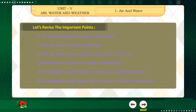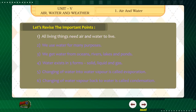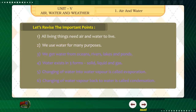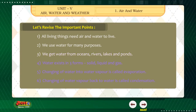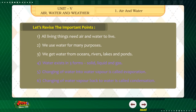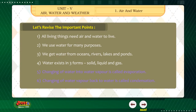Let's revise the important points. 1. All living things need air and water to live. 2. We use water for many purposes. 3. We get water from oceans, rivers, lakes and ponds. 4. Water exists in three forms: solid, liquid and gas.